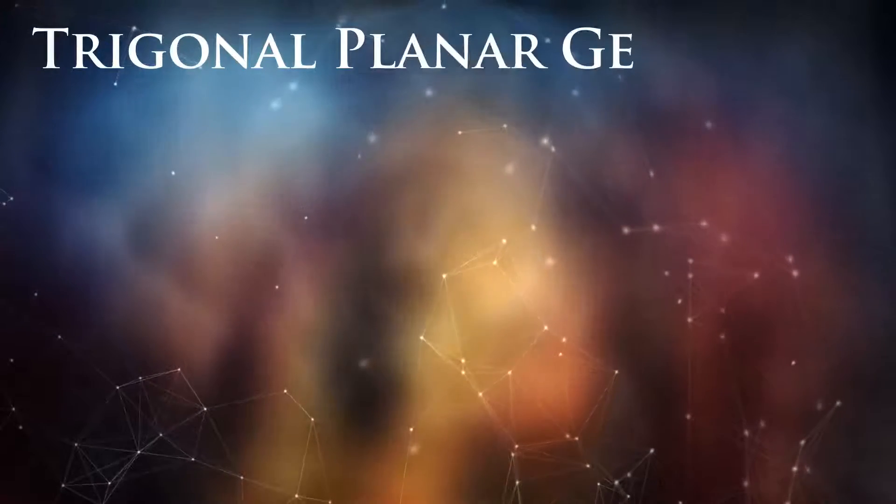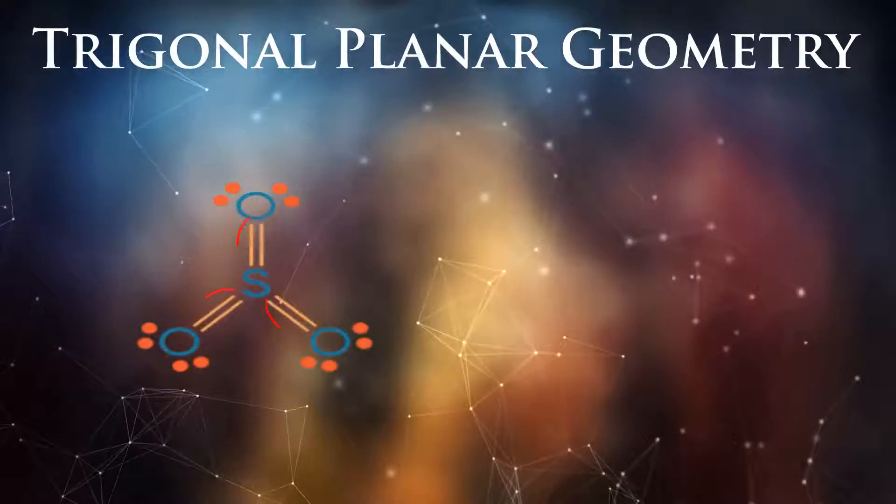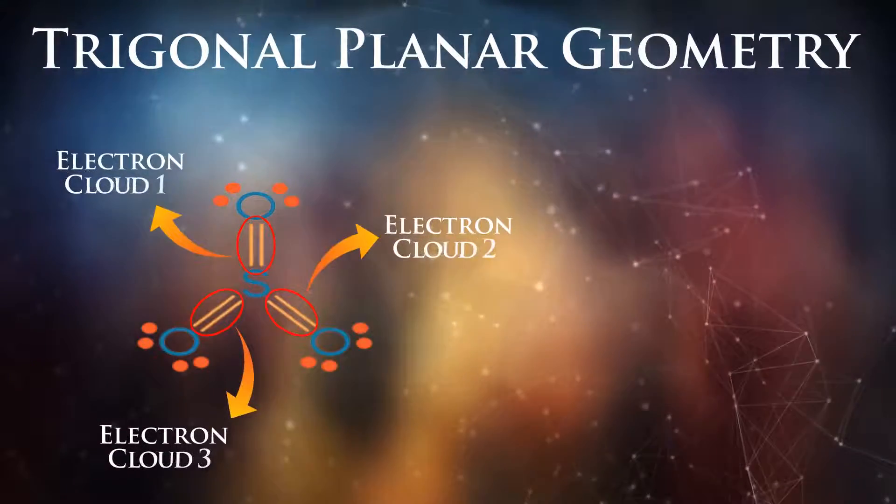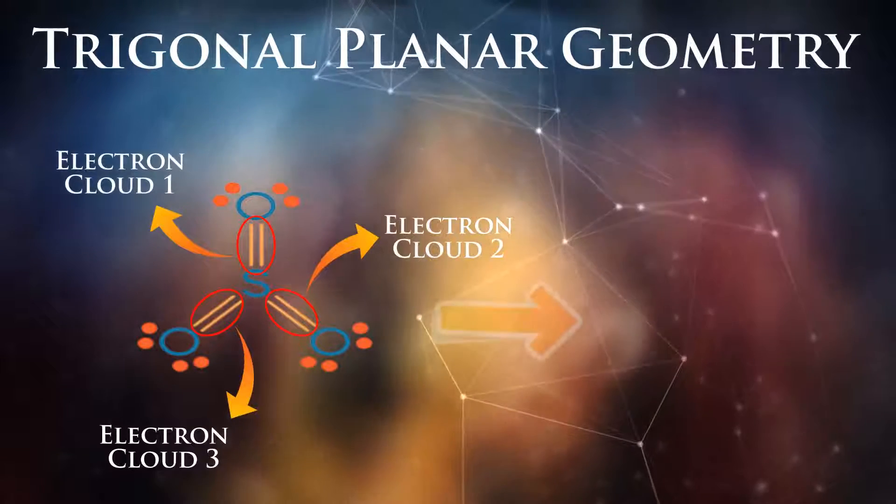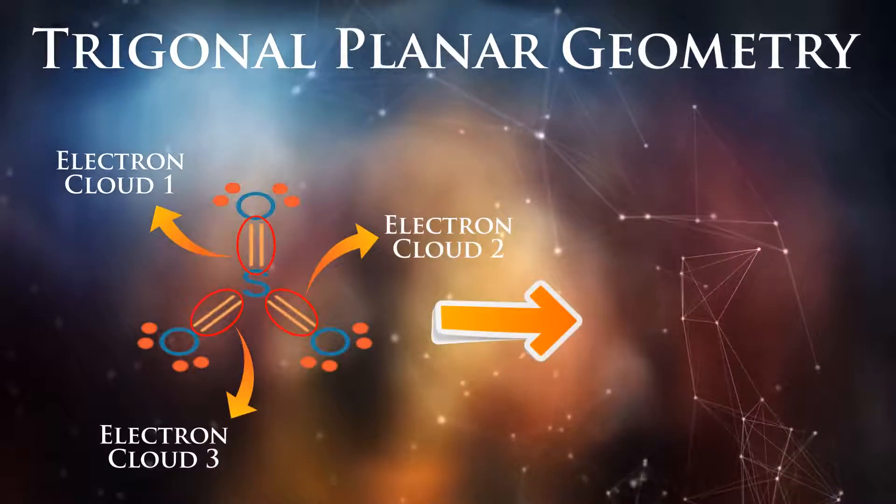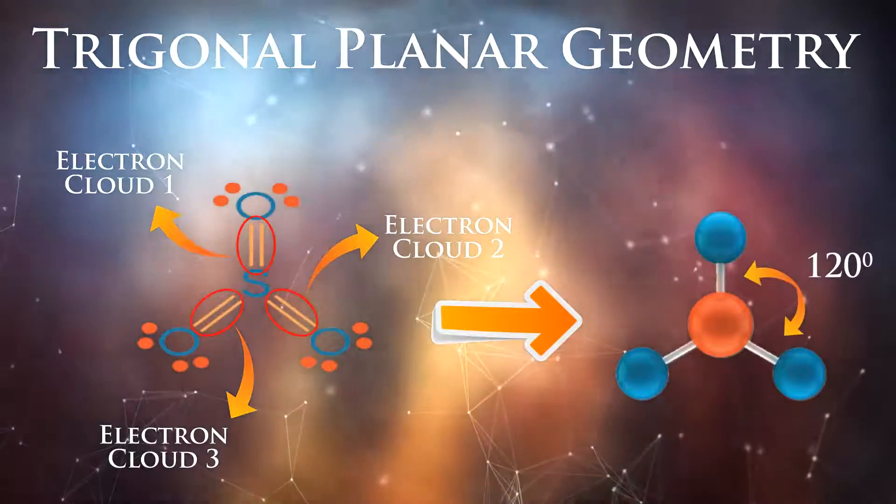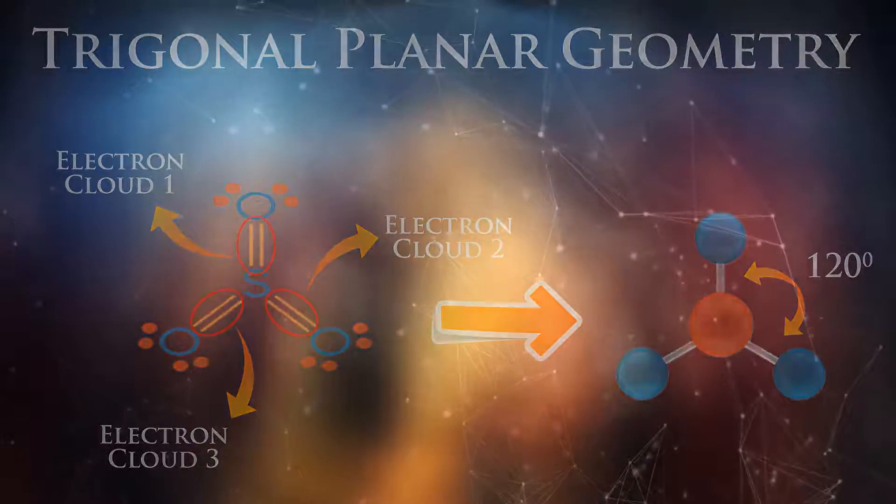Molecules which have their central atoms surrounded by three electron clouds, such as sulfur trioxide, will create a trigonal planar geometry. The electron clouds will try to get far away from each other, and that will lead to an angle of 120 degrees between them.